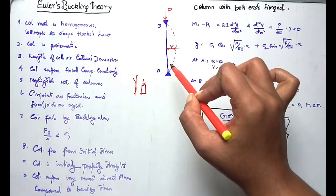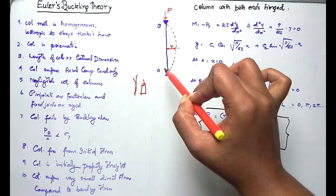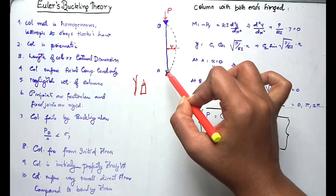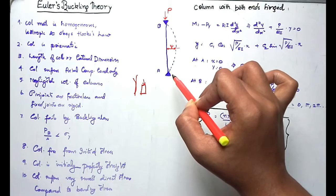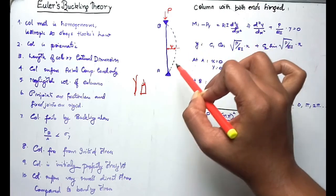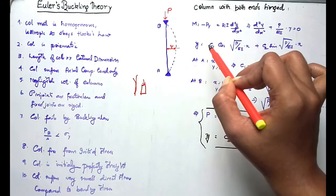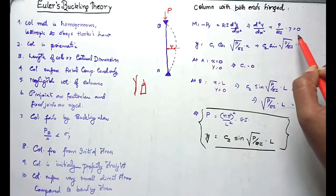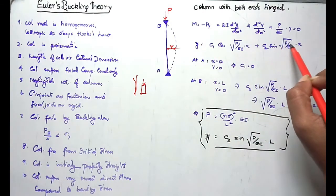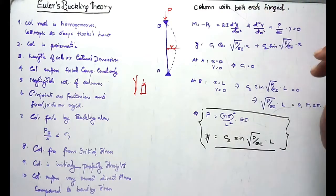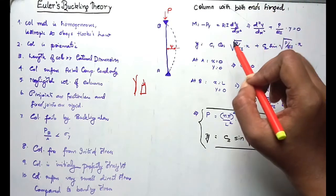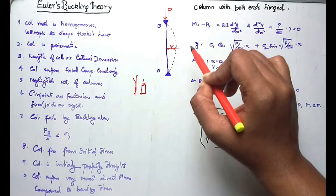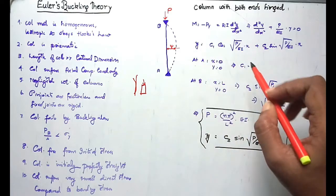The column has a length from 0 to L. At end A, x = 0, and since it is hinged, deflection should be zero, so y = 0. Substituting x = 0: sin(0) = 0, cos(0) = 1, so C1 equals zero.